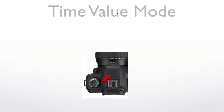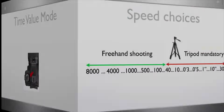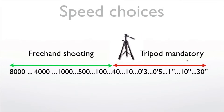The time value mode is the opposite of AV mode: you decide the time and the camera decides the aperture. What speeds do cameras have? The fastest is 1/8000 of a second — you need a lot of light for that. Then it goes down to 1/4000, 1/1000, 1/500, 1/100, 1/40 of a second, then 0.3 seconds, 0.5 seconds, 1 second, 5, 10, and 30 seconds — usually the longest. The shutter speed is the time the shutter is open and light can come in.